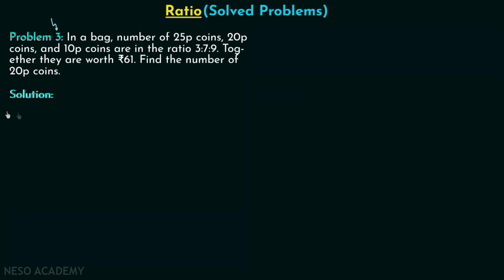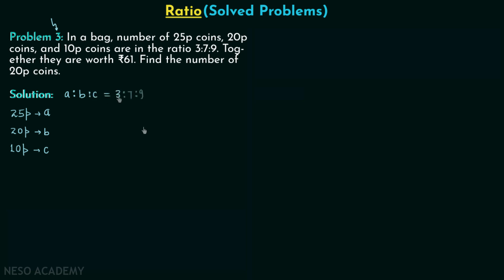In the bag of money we have 25 paise coins, 20 paise coins, and 10 paise coins. Let us say that A is the number of 25 paise coins, B is the number of 20 paise coins, and C is the number of 10 paise coins. As per the question, A:B:C = 3:7:9.